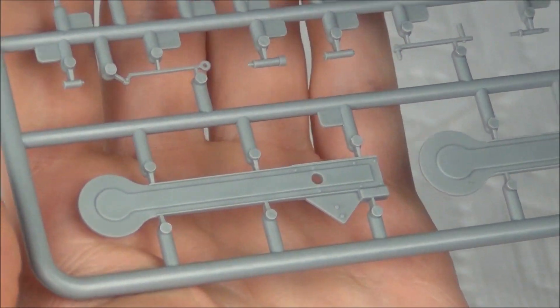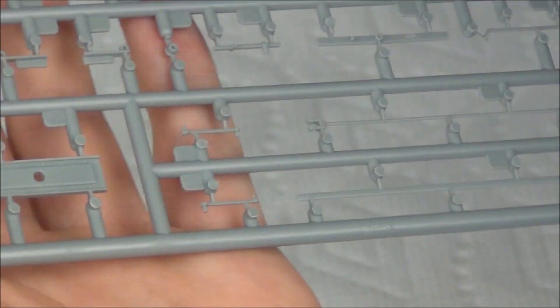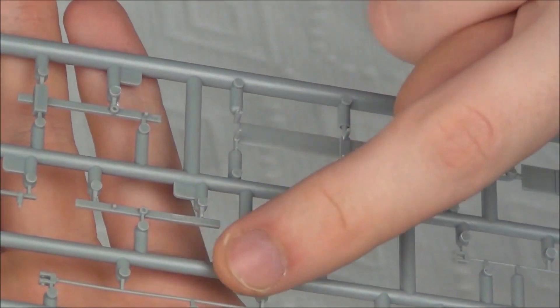More nice rivets over here. Everything looks nicely molded. I don't really see any flash or anything on the plastic. It's just lots of little parts on the sprue though. You can see there's tons of these little bits of the mechanism.